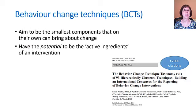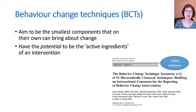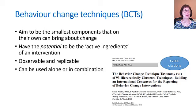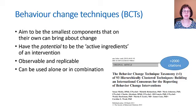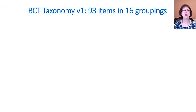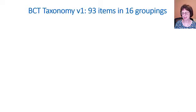Looking at the behaviour change techniques — what are these? They aim to be the smallest components that on their own can bring about change. But I should stress they have the potential to be the active ingredients of an intervention, and not necessarily are. They're observable and replicable and can be used alone or in combination. The original paper was published back in 2013. The taxonomy has 93 items and has been grouped into 16 groups.